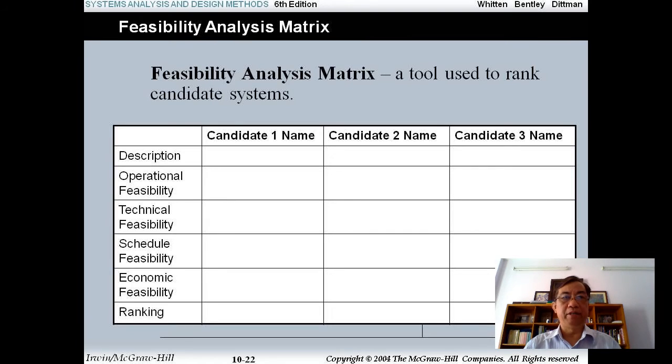In the columns, you see the description. You have the operational feasibility, the technical feasibility, the schedule (you have a limit of time), economic feasibility (you have the economic limited investment), and the ranking. The reputation of your company who wants to set up the information system for your organization. So the feasibility analysis matrix can help you to compare between or among the candidates.